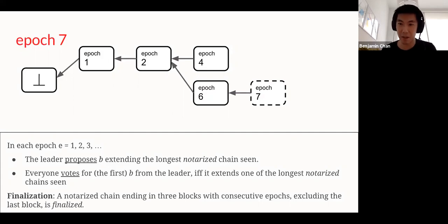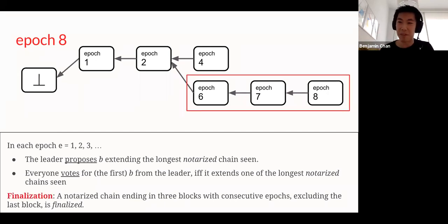Let's say epoch 7 proceeds normally. The leader chooses to extend the epoch 6 block. Maybe the epoch 8 block leader chooses to extend the epoch 7 block. And again, all the blocks are notarized, so all the blocks are signed by at least 2 n over 3 processes or players. Now, we see 3 epoch numbers in a row. 6, 7, and 8. A light should be going off in your head, because this is exactly when we can apply our finalization rule. We know that a notarized chain ending in 3 blocks with consecutive epoch numbers, 6, 7, and 8, is finalized, excluding the last block. So we can finalize the genesis 1, 2, 6, and 7 blocks, which I've marked in green. We can argue, once we finalize these blocks, we know that we've reached agreement on these green blocks. We can execute the transactions inside of them.